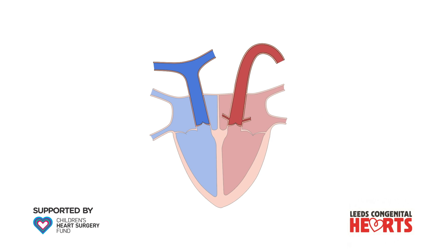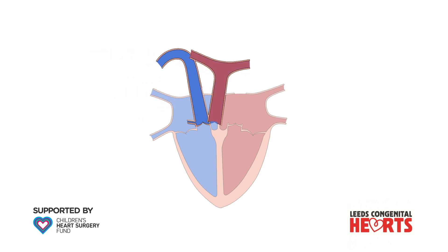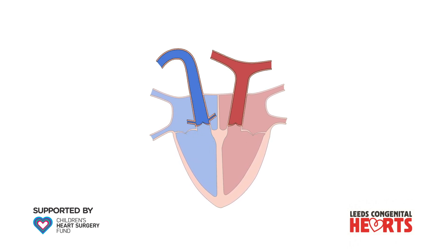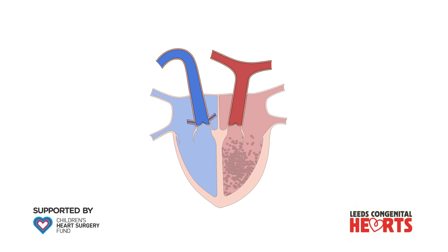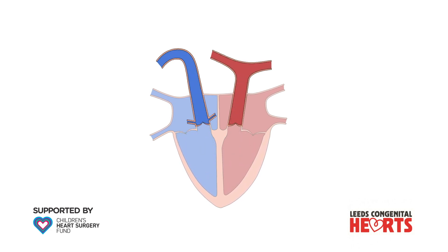In transposition of the great arteries, the aorta and pulmonary artery are connected to the heart the wrong way round. This means that blood returning from the body that is low in oxygen is pumped out of the right ventricle to the aorta and so back around the body. At the same time, blood returning from the lungs that has lots of oxygen is pumped from the left ventricle to the pulmonary artery and back to the lungs. The consequence of transposition of the great arteries is that oxygen cannot be delivered to the body and unless treated quickly, the baby is unlikely to survive.